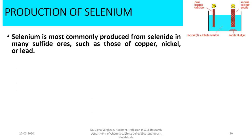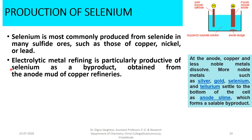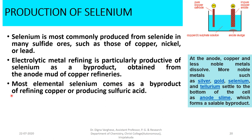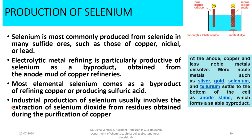Selenium is most commonly produced from selenide in many sulphide ores such as copper, nickel, or lead. Electrolytic metal refining is particularly productive of selenium as a byproduct obtained from the anode mud of copper refineries. Industrial production of selenium usually involves the extraction of selenium dioxide from residues obtained during the purification of copper. During copper purification, at the anode, copper and less noble metals dissolve, while more noble metals such as silver, gold, selenium, and tellurium settle to the bottom of the cell as anode slime, from which selenium can be extracted.